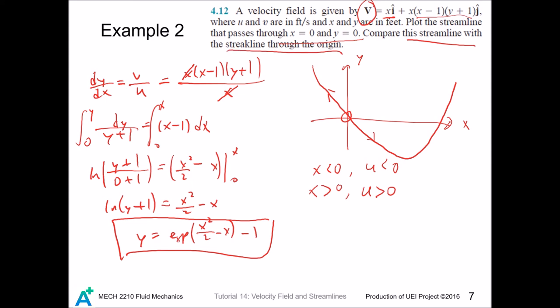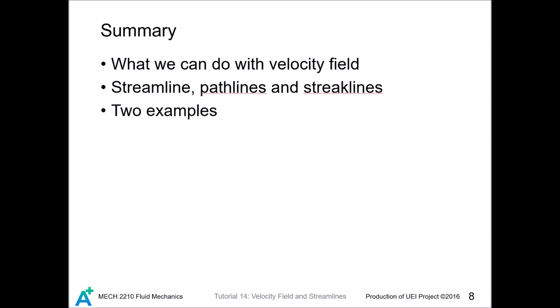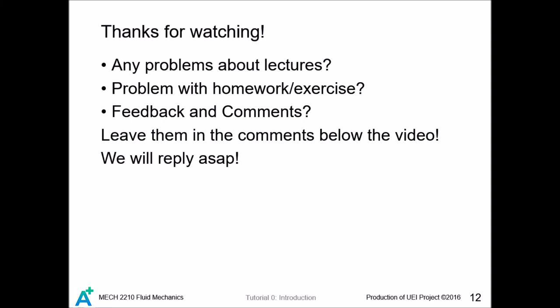And finally we shall answer this question. We see that the velocity field is independent of t, so that the flow is steady, and for steady conditions the streak line is same as the streamline as we found. This is path through origin. So today we discussed what we can do with velocity field. We also looked at what is streamline, path line and streak line. Finally we worked through two examples about that. Hope you enjoyed this video and thanks for watching. Feel free to ask us any questions and give us any feedback in the comments.